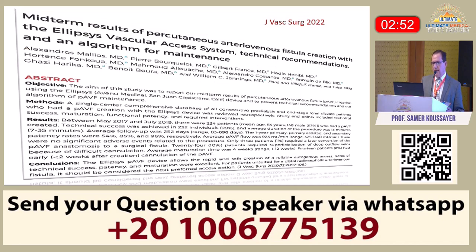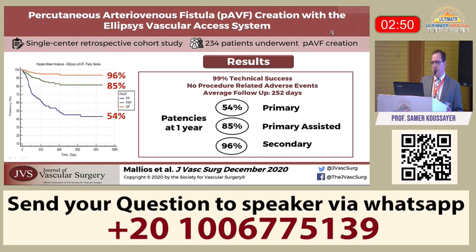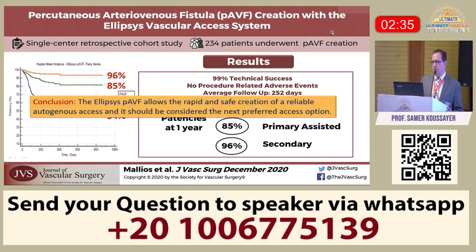Regarding Ellipsis outcomes: a single-center retrospective cohort study with 234 patients showed a 99% technical success rate. Primary patency was about 50%, primary-assisted patency was 85%, and secondary patency was 96%. The conclusion was that Ellipsis allows for rapid and safe creation of reliable autogenous access and should be considered the next preferred access option.